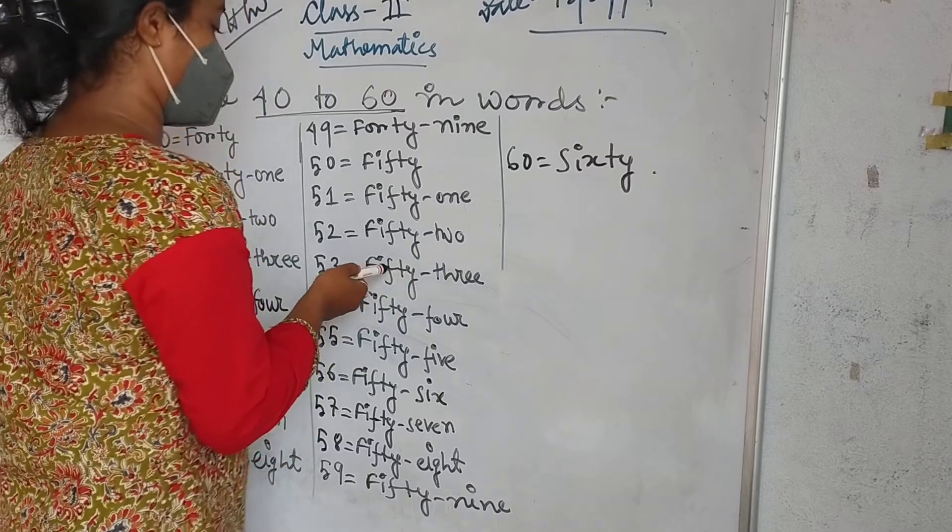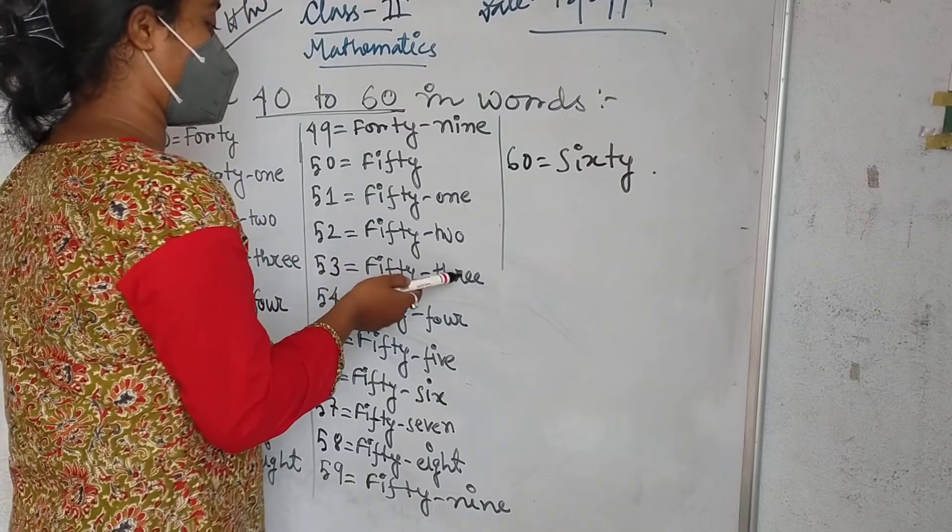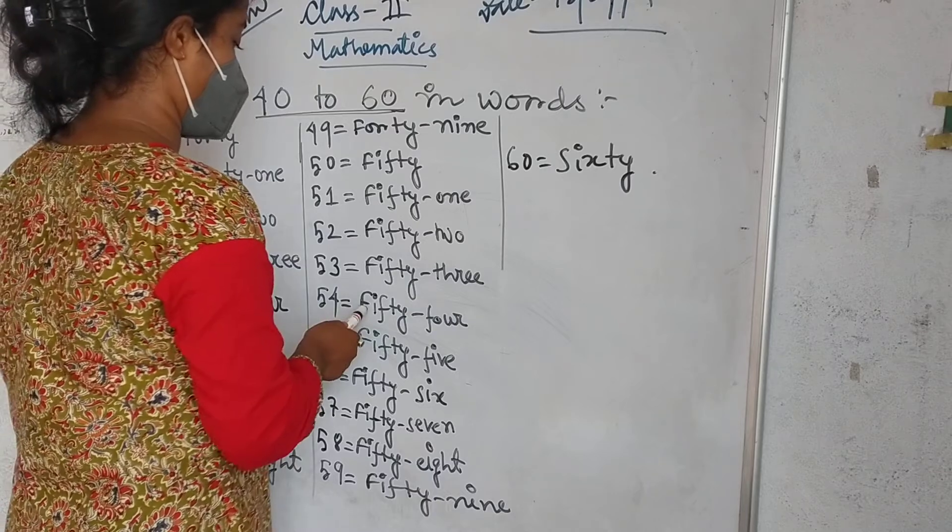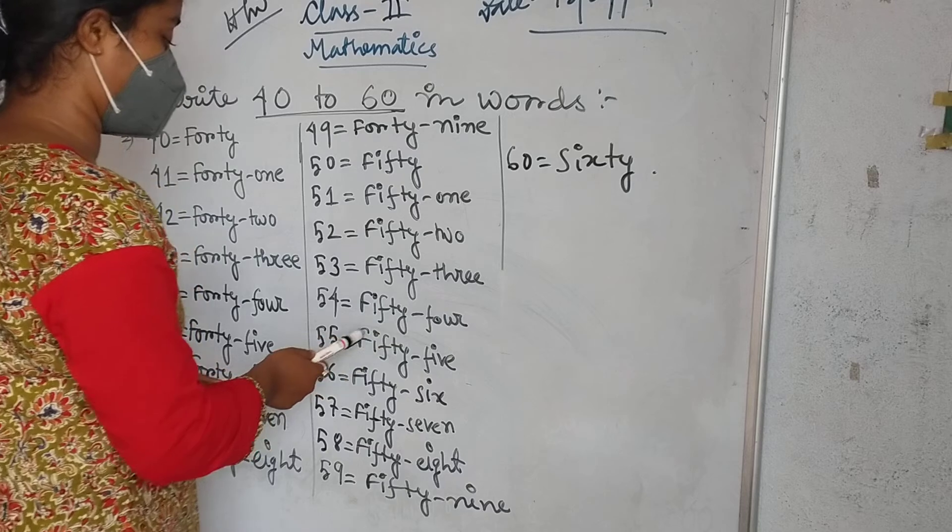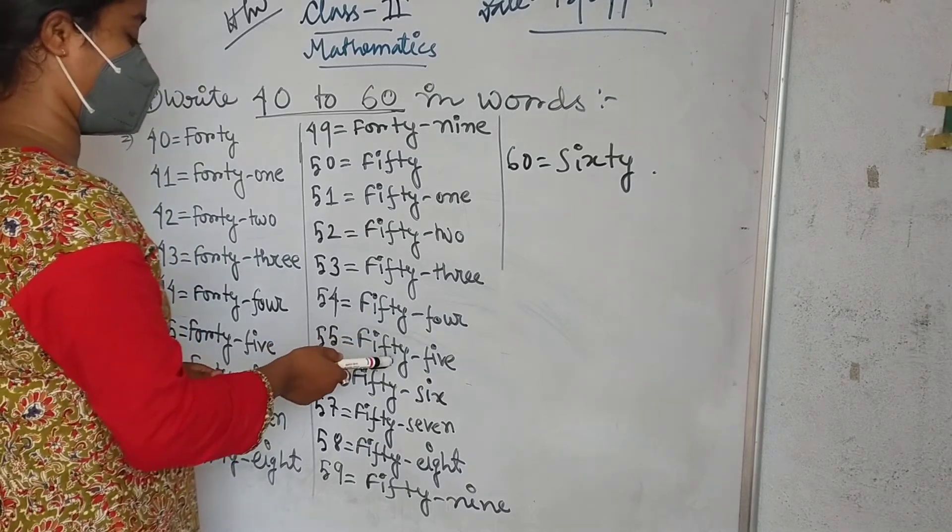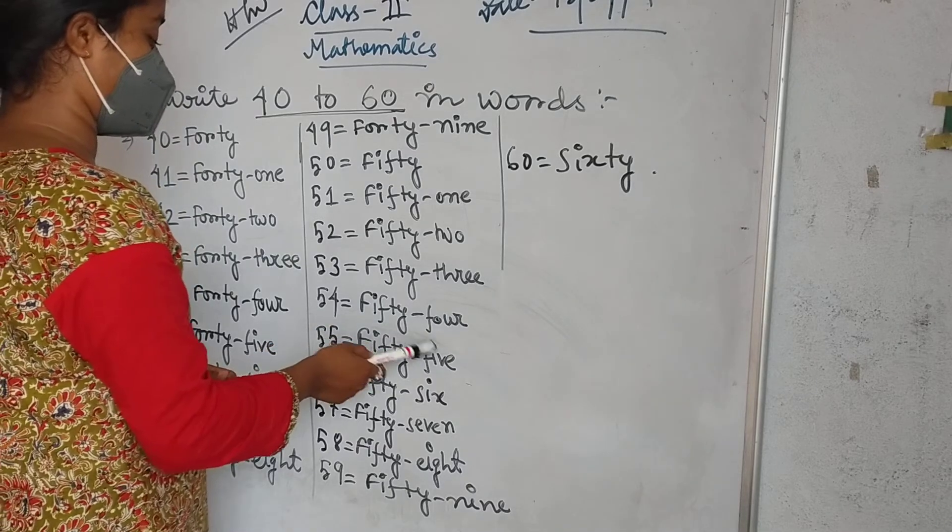Then 53: F-I-F-T-Y, fifty, T-H-R-E-E, three, fifty-three. Then 54: F-I-F-T-Y, fifty, F-O-U-R, four, fifty-four. Then 55: F-I-F-T-Y, fifty, F-I-V-E, five, fifty-five.